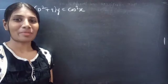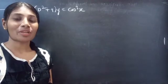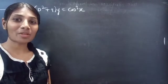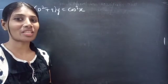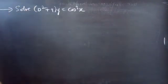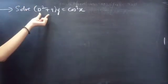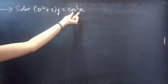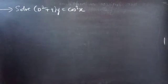Hello everyone, this is Jay Kalitna here. In this video, we are going to solve a differential equation from higher order linear differential equations. Problem: Solve (D² + 9)y = cos³x.